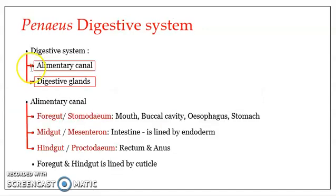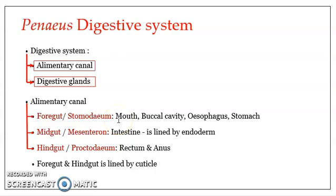The digestive system is composed of two parts: the alimentary canal and digestive glands. The alimentary canal is a tube through which food passes, extending from mouth to anus. It can be divided into three parts: the foregut, midgut, and hindgut. The foregut, otherwise known as stomodeum, includes mouth, buccal cavity, esophagus, and stomach. The midgut, referred to as mesenteron or mesodeum, is composed of the intestine. The hindgut, the posteriormost part, is also known as proctodeum and includes the rectum and anus.